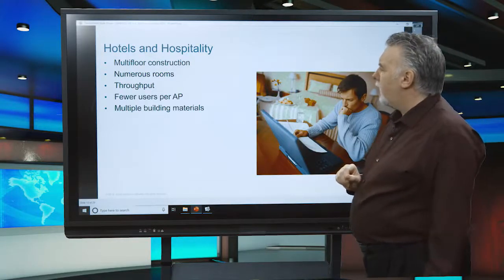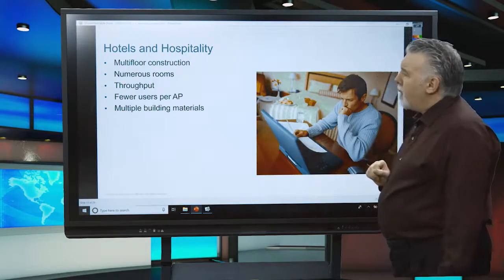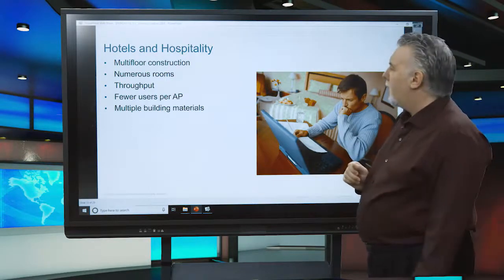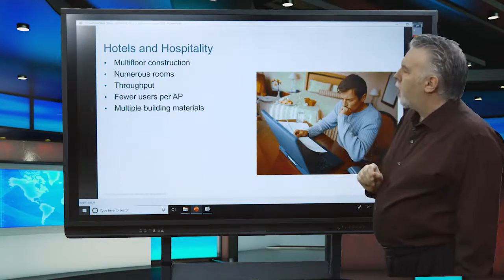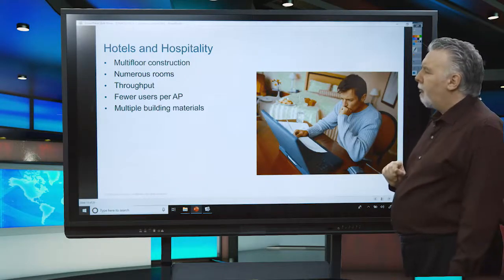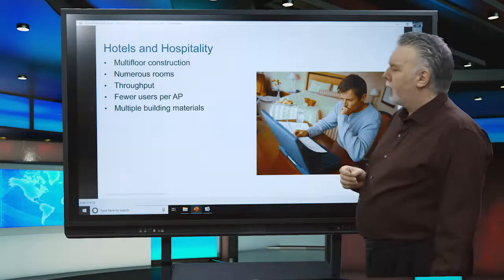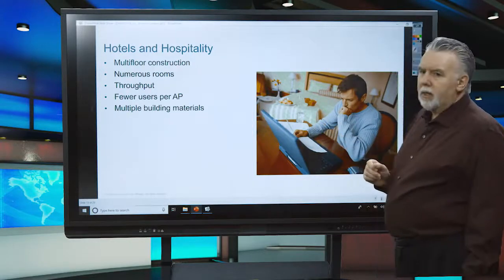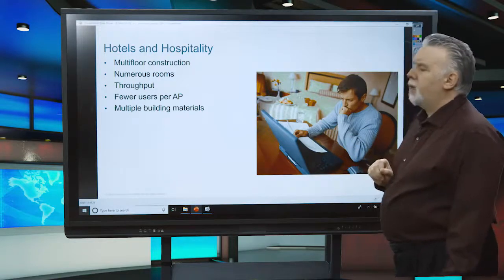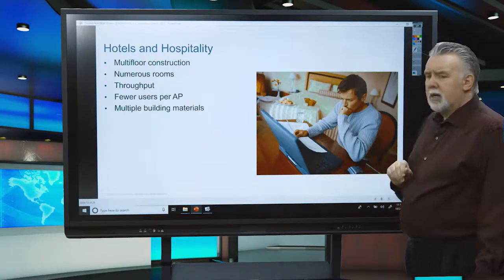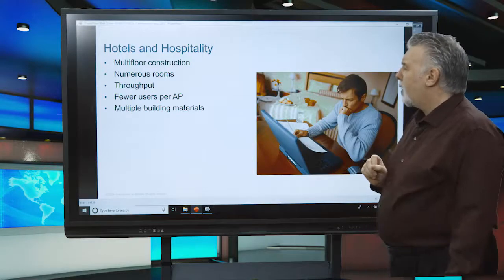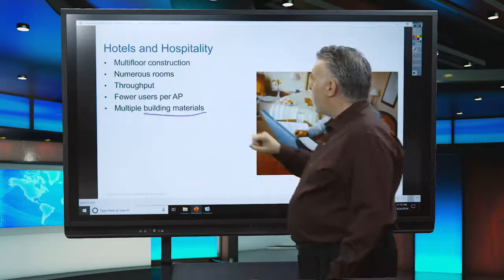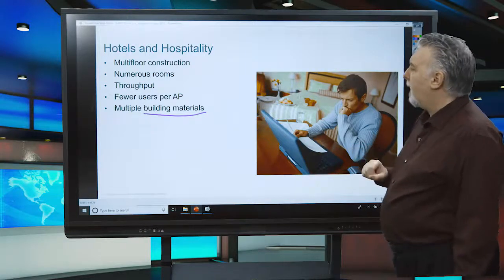Hotels tend to be multi-floor constructions usually made of poured concrete. You may have one AP per room or one AP covering multiple rooms. The standard mode is to place an AP in the corridor, but this can be restrictive. Consider what throughput you want to offer — some hotels offer basic operation with paid enhanced Wi-Fi tiers by the hour, day, or month. User counts can double or triple on weekends when families stay, and building materials vary significantly.